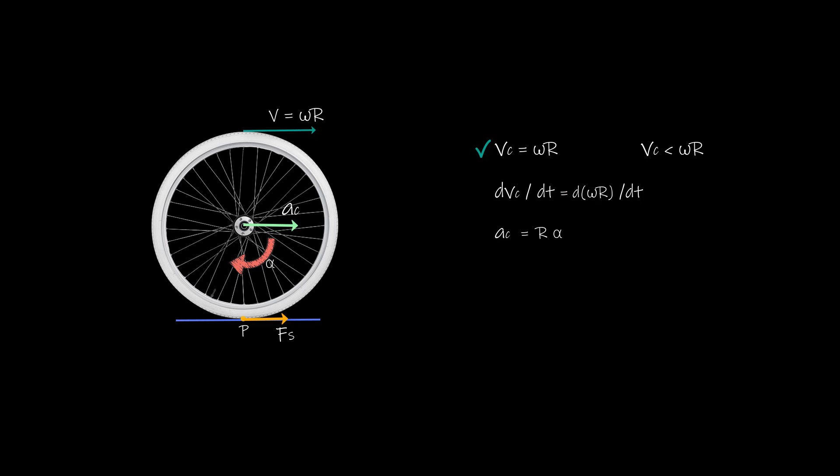So, what we have done is connected the linear acceleration and angular acceleration alpha. Now, we can also say that for smooth rolling, a center of mass should equal r alpha.